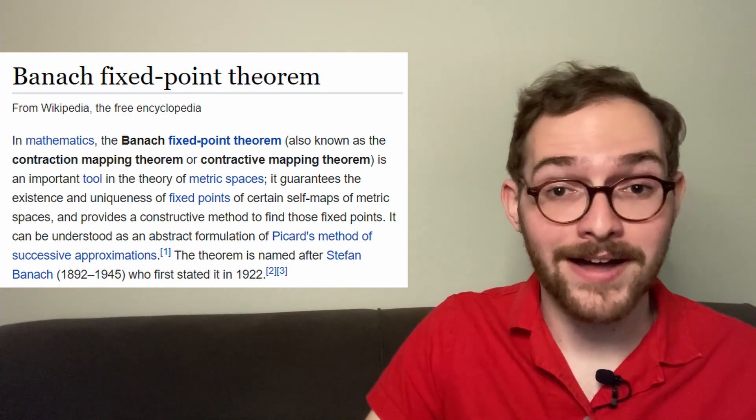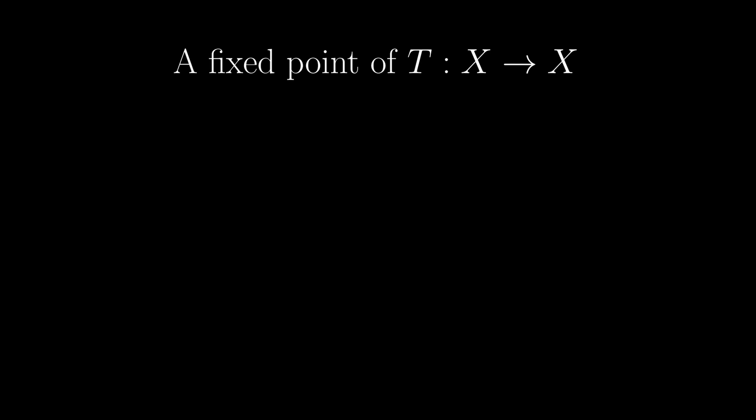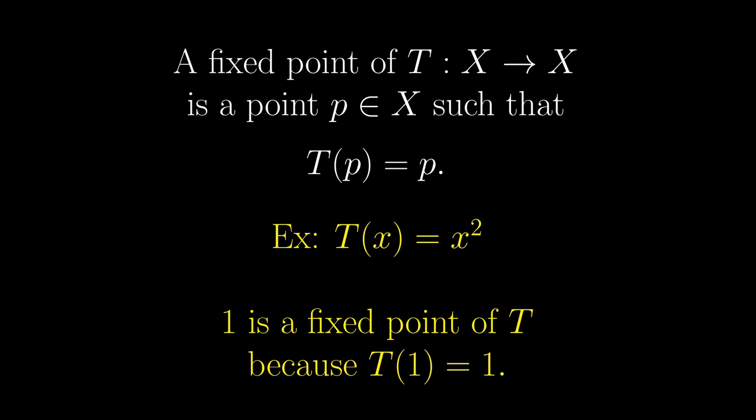As the name might suggest, this theorem is about fixed points. A fixed point of a transformation t is a point that doesn't change when you apply t. For example, if we take t of x equals x squared, 1 is a fixed point of t because t of 1 equals 1.